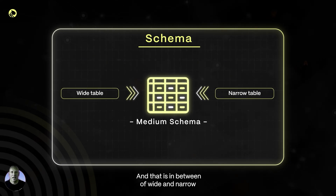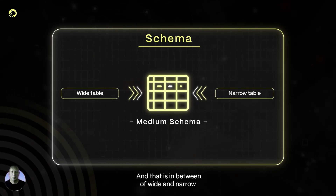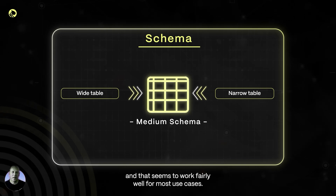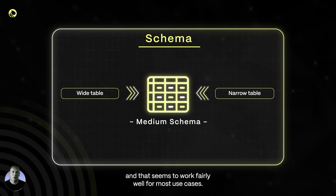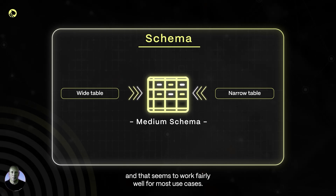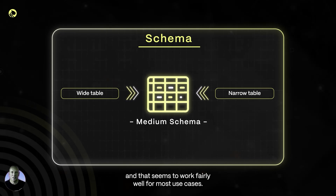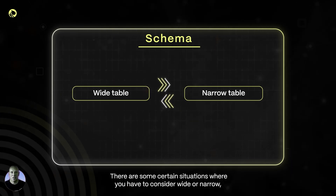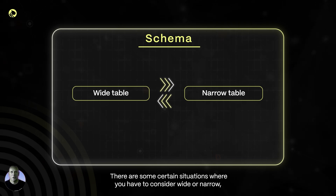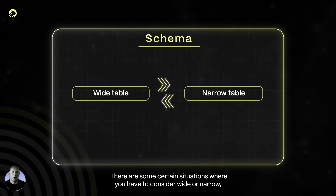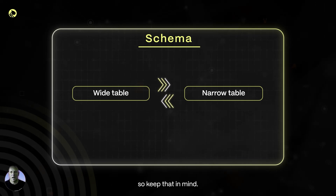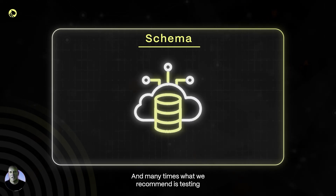A medium schema is in between wide and narrow, and that seems to work fairly well for most use cases. There are certain situations where you have to consider wide or narrow, so keep that in mind.